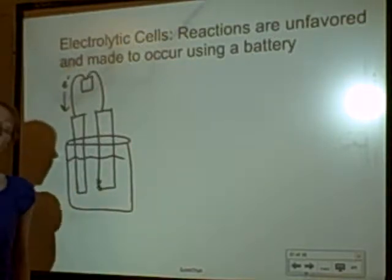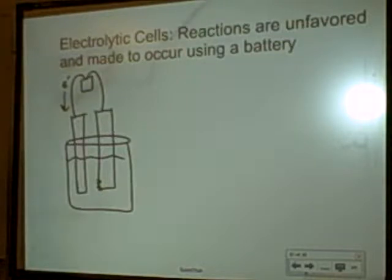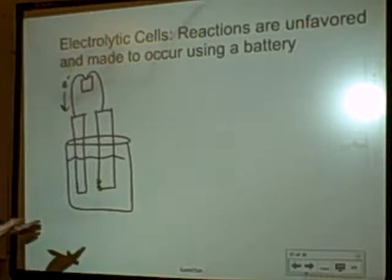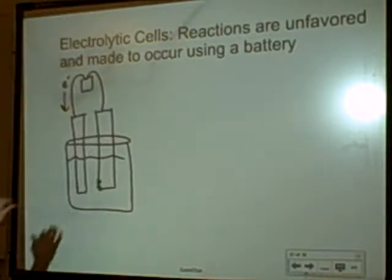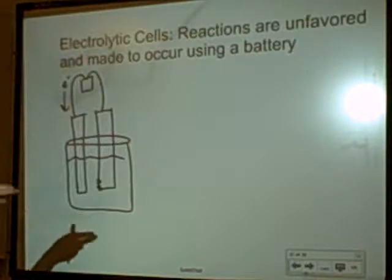Unless there's something easier to oxidize or reduce, which would be the water almost always. So, let's label the parts real quick. The cell is very similar, but it usually happens in one cell instead of the two that we used for galvanic.